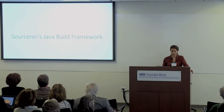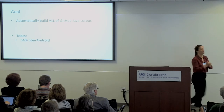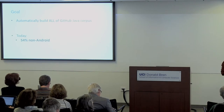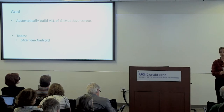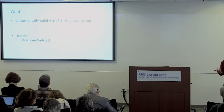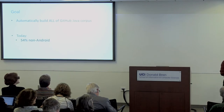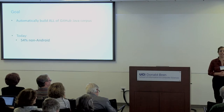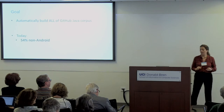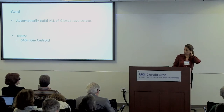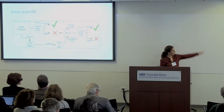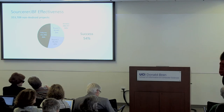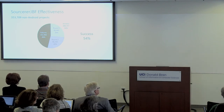Another tool we're working on is the Java build framework. We have half a million Java projects on GitHub and we'd like to do static and dynamic analysis on them. For dynamic analysis we need bytecodes, so we need to build these projects. Many don't come with build scripts, and even those that do — we actually don't want to use them. We built a Java build framework able to compile a large amount of source code, and we have a success rate of 54%, basically ignoring their build scripts.